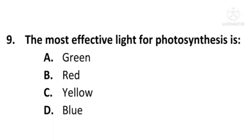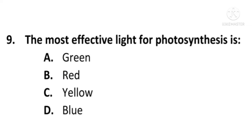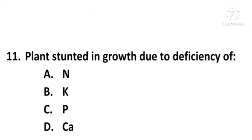Next question: The most effective light for photosynthesis is — A) Green, B) Red, C) Yellow, or D) Blue. The answer is B, Red. The most effective light for photosynthesis is red light; B is the correct option.